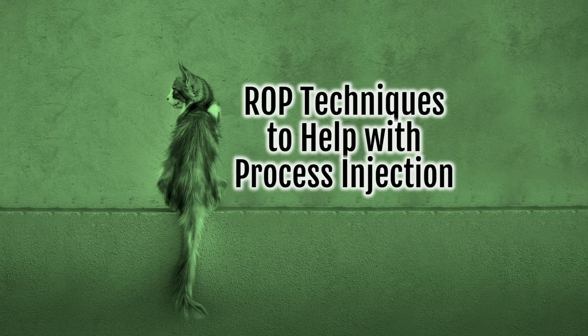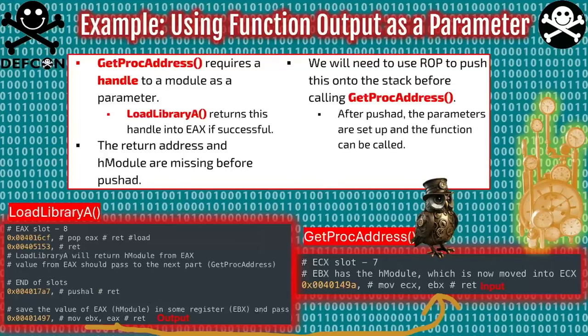Some generic ROP techniques for process injection: one is using function output as a parameter. GetProcAddress and LoadLibrary often go hand in hand. With LoadLibrary we get a handle to a module — the base address of a certain DLL — which is required for GetProcAddress. We take the output from one, which is returned to us in EAX, and use that subsequently in GetProcAddress. Return values as well as other out parameters, if you're dealing with native APIs, all follow this principle.